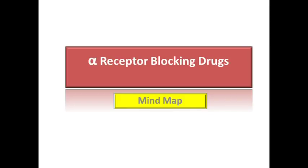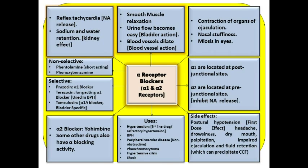Alpha receptors are divided into alpha-1 and alpha-2, and we also have subtypes of each. Alpha-1 receptors are located especially at the post-junctional sites on effector organs, while alpha-2 receptors are located pre-junctionally. Some alpha-2 receptors are also located on organs like the pancreas and brain. These are inhibitory receptors, and their activation leads to inhibition of neurotransmitter release, especially noradrenaline.